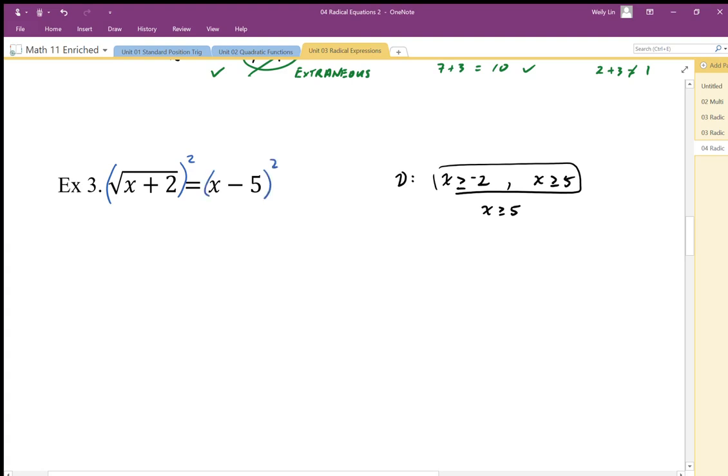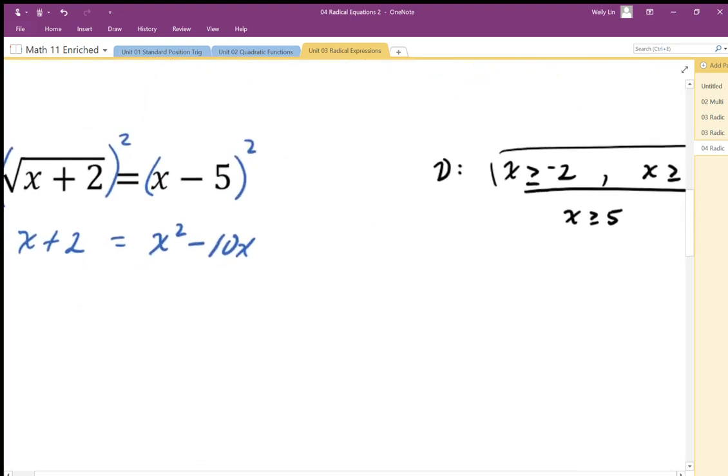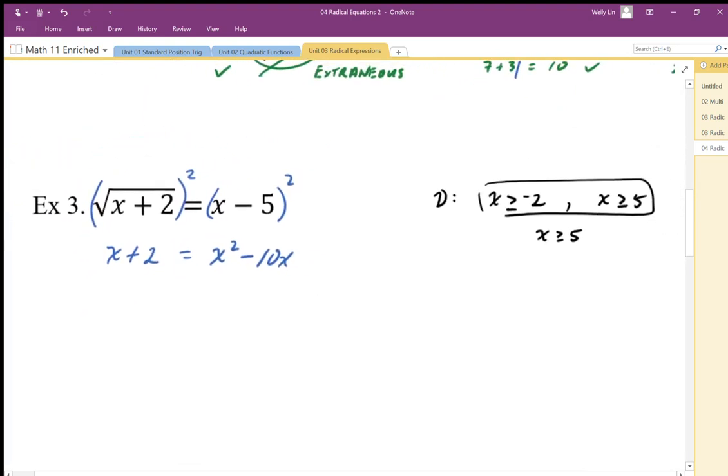So here, I'm going to undo the square root with a square. x plus 2 equals x squared, and make sure you FOIL that out, 10x, that's 25, negative 5 times negative 5 is going to be positive 25.